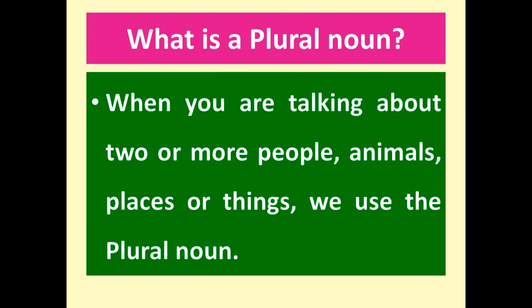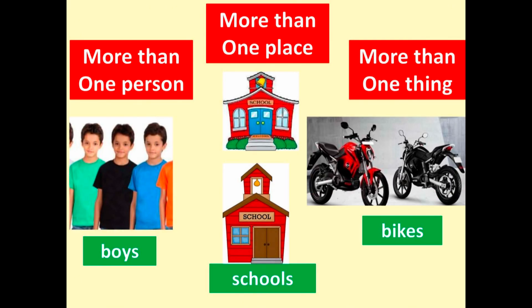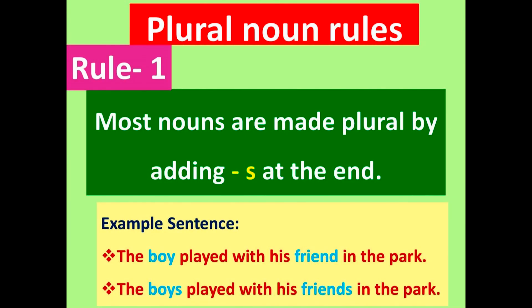What is a plural noun? When you are talking about two or more people, animals, places, or things, we use the plural noun. See the picture of more than one person — boys; more than one place — schools; more than one thing — bikes. We have eight rules for plural nouns. We will learn one by one.